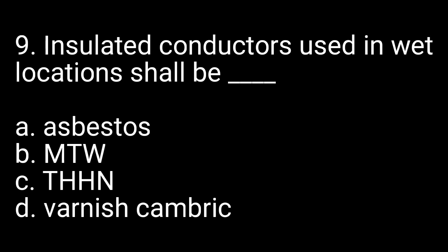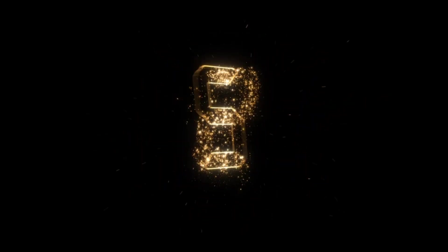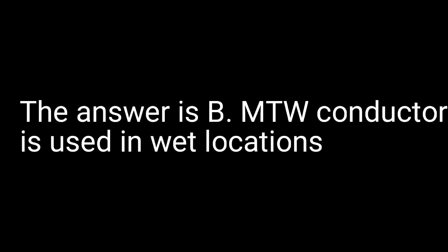Question 9. Insulated conductors used in wet locations shall be: A. Asbestos. B. MTW. C. THHN. D. Varnish cambric. The answer is B. MTW conductor is used in wet locations.